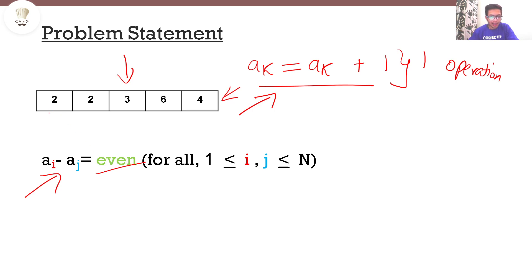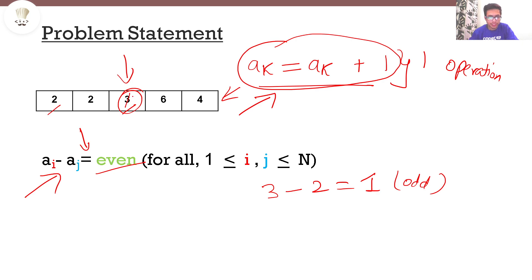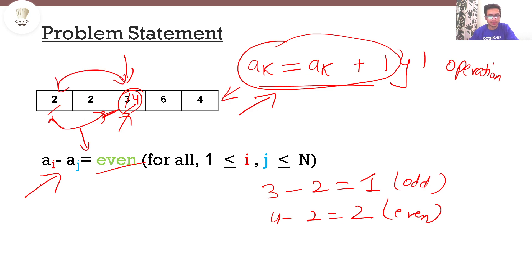Let's say I take two numbers 2 and 3 from this array. The difference between the two is 3 minus 2, which is 1, which is odd. So our condition is being violated. What I can do is perform this operation on the number 3 — I'll replace 3 by 3 plus 1, which is 4. Now the difference between these two numbers is 4 minus 2, which is 2 and which is even. So for these two numbers, this condition is now satisfied.